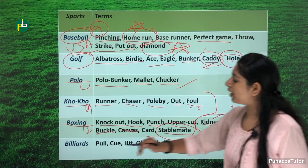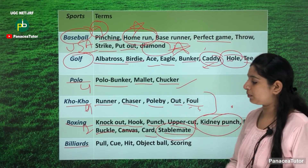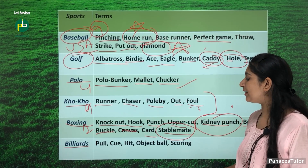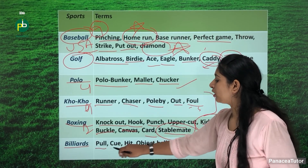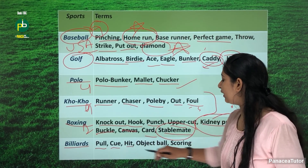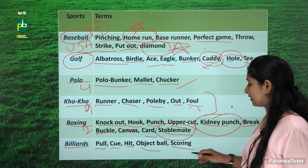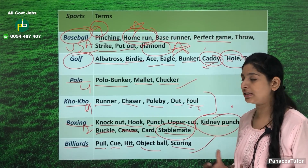Let's move on to the next game — billiards. Billiards is related to some important terms: pull, cue, hit, object ball and score — these are all terms associated with billiards.